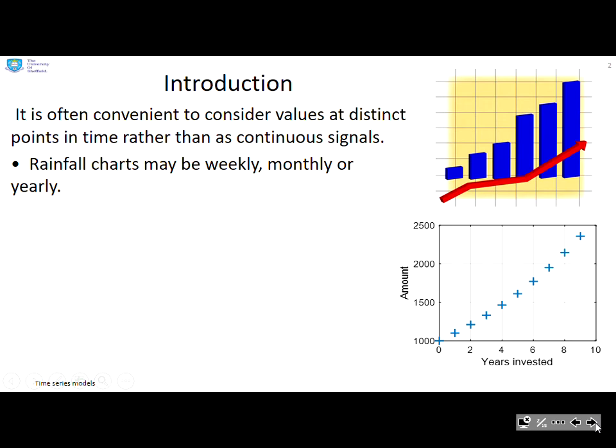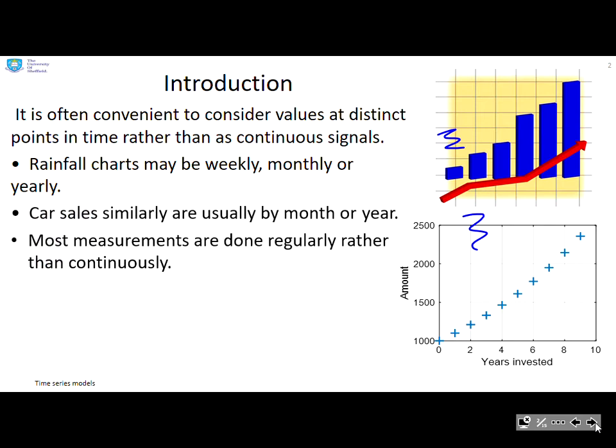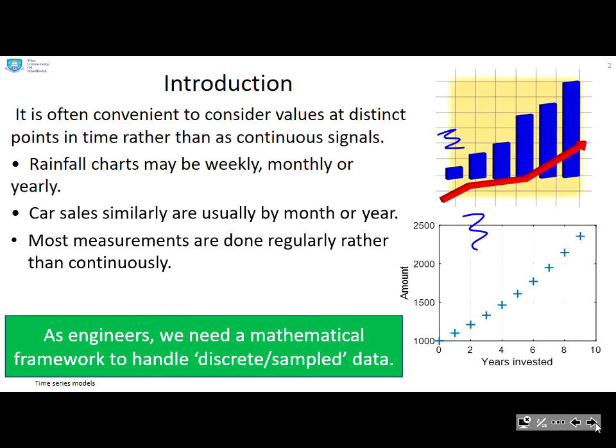It's often convenient to consider values at distinct points in time rather than as continuous signals. You can see that with these two graphs here. Rainfall charts, for example, might be weekly, monthly or yearly. Car sales are usually by month or year and often measurements are done regularly rather than continuously. As engineers, we need a mathematical framework to handle this discrete or sampled data.